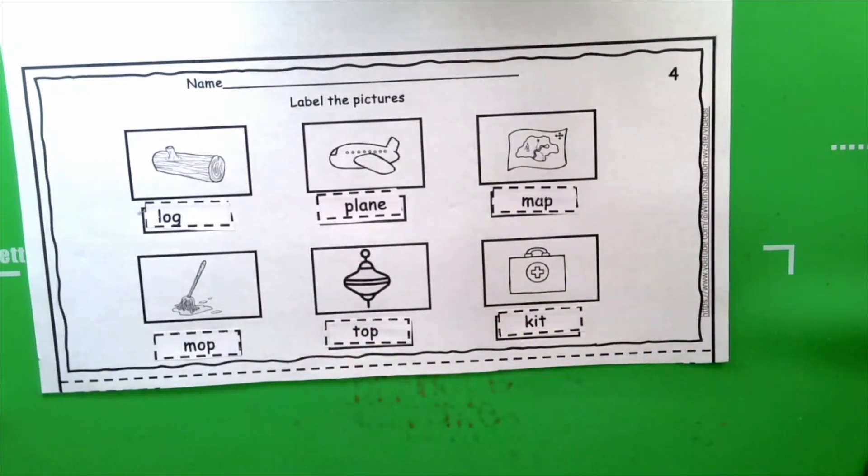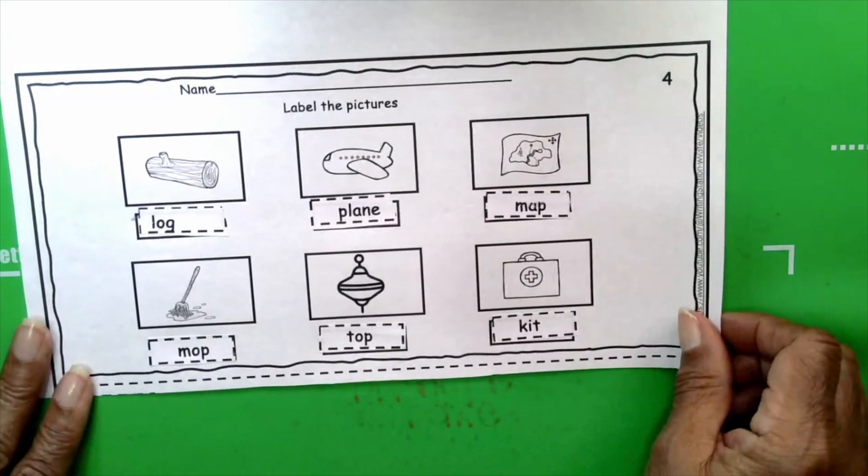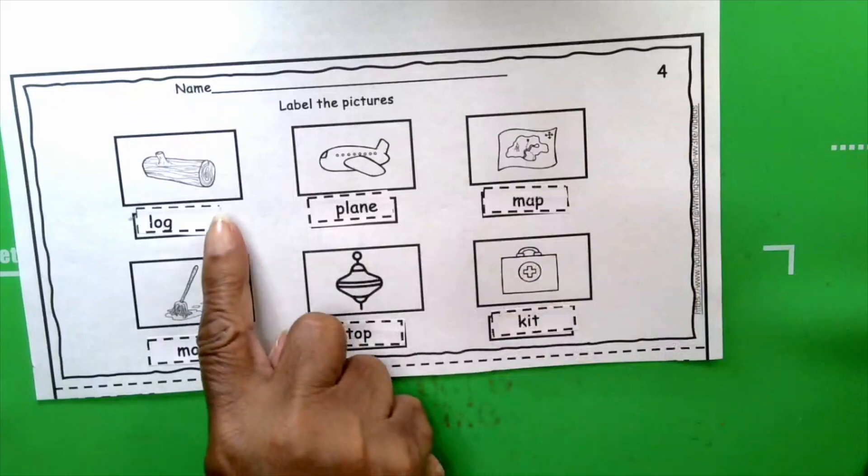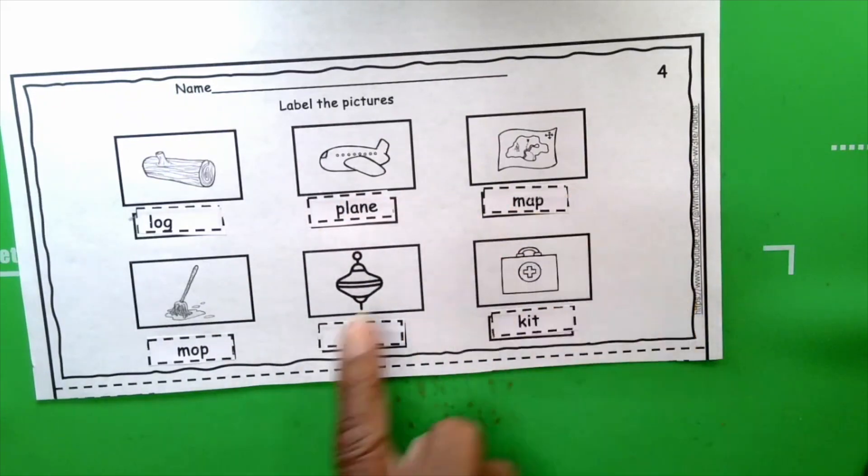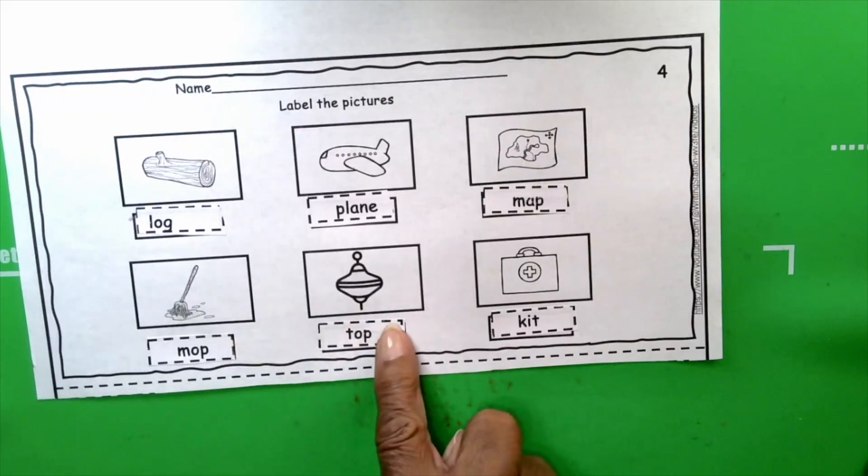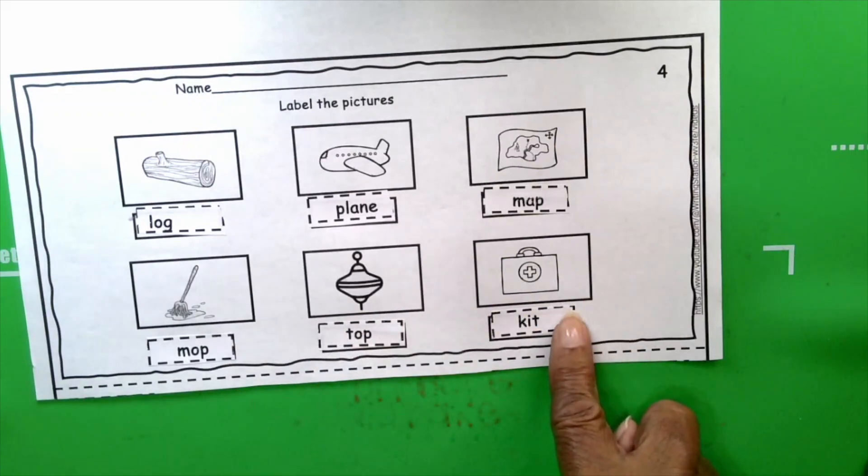How about that, boys and girls? That was pretty good, wasn't it? Let's say the words: log, plane, map, mop, top, kit. We just labeled our pictures. Very good. Now we have to color our pictures. I'm going to fast forward the video and I'll be right back.